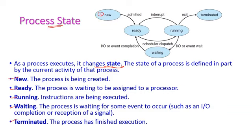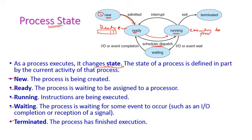The first state is the new state — when the process is being created, it is in the new state. Once the process is created, it is admitted to the ready queue and enters the ready state, meaning it is ready to execute. When the scheduler dispatches the process to the CPU, the state becomes the running state — that is, the process is being executed.